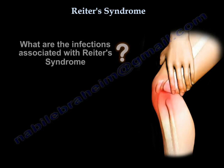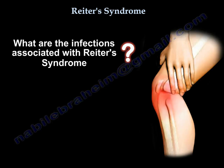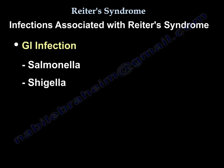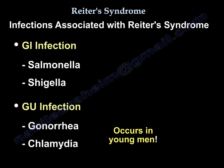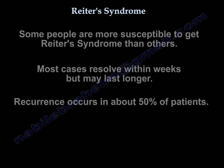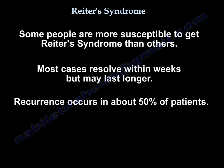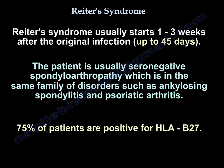What infections are associated with Reiter's syndrome? GI infections such as Salmonella and Shigella, and GU infections such as gonorrhea and chlamydia. It occurs in young men. Reiter's syndrome usually starts one to three weeks after the original infection, and can go up to 45 days.